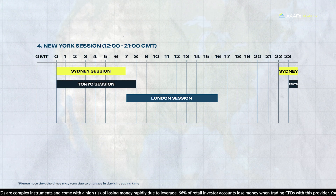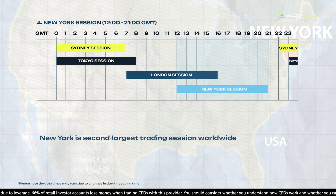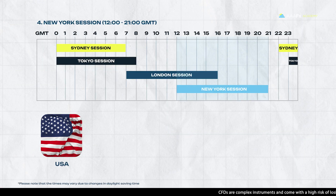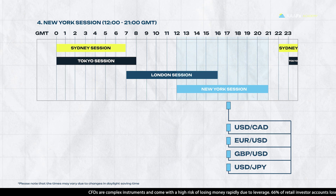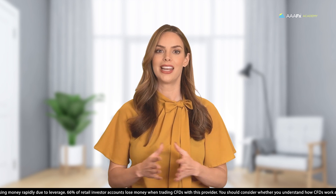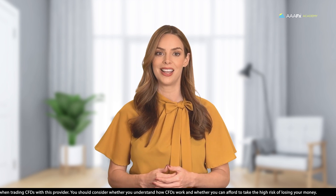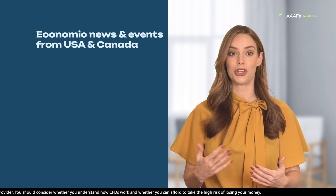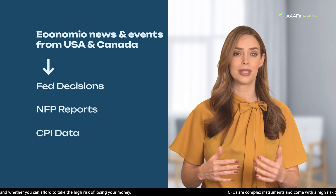The fourth session is the New York session. The New York session, the last to open, but certainly not the least, claims its spot as the second largest trading session worldwide, casting its influence over American and some Canadian markets, including the USA, Canada, Mexico, and Brazil. The main currency pairs traded are USD-CAD, EUR-USD, GBP-USD, and USD-JPY. The New York session is also very active and volatile, with high liquidity and spreads. It is the most influential session for CFD and Forex trading, as it reflects the sentiment and expectations of the global market. Economic news from the USA and Canada, like Fed decisions, NFP reports, and CPI data, can send ripples through this otherwise bustling session.